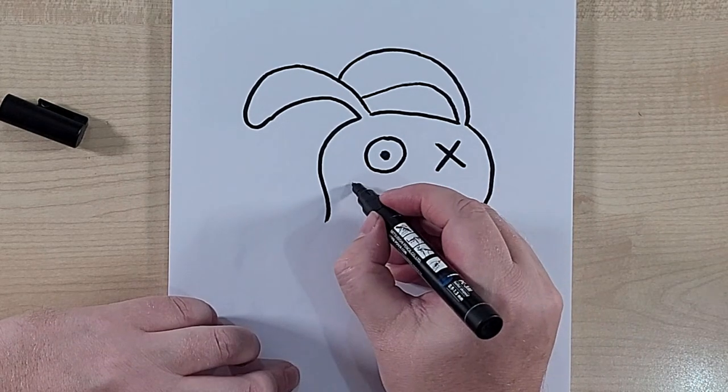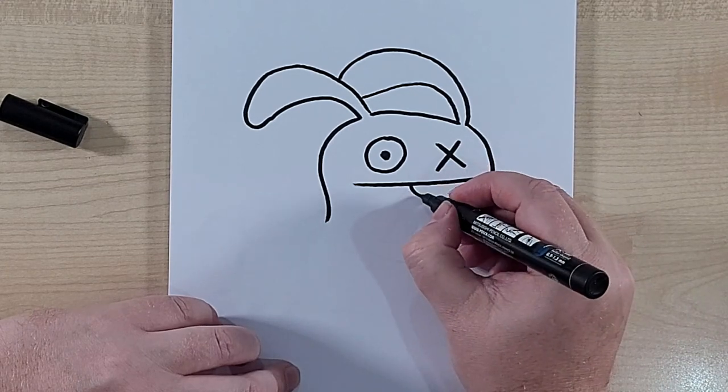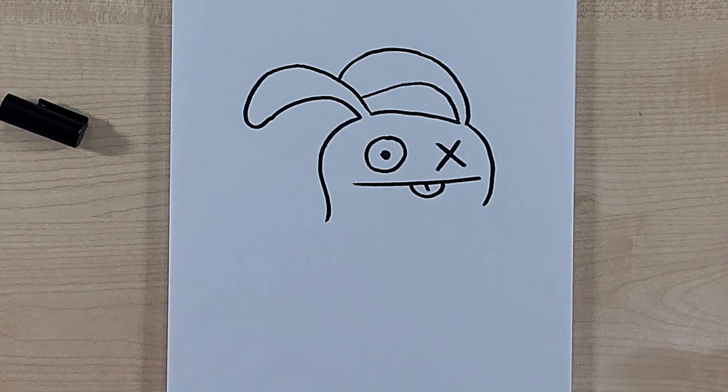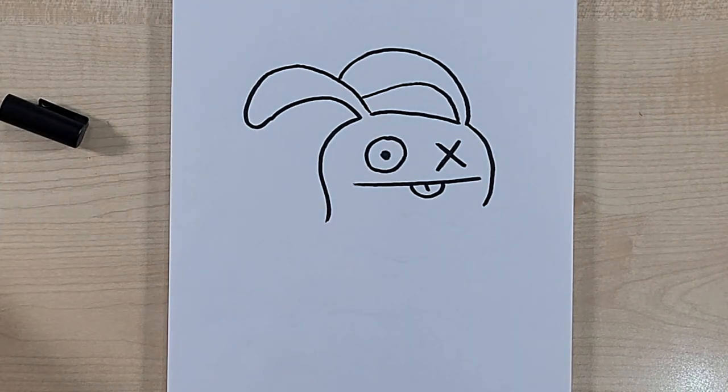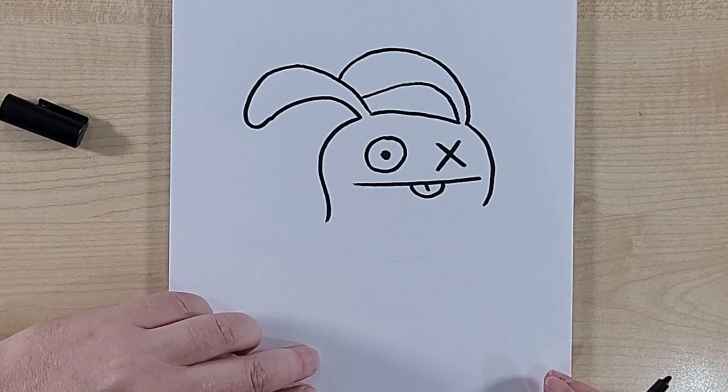And let's draw his mouth. He has got a long straight mouth, just like a lot of the ugly dolls. And he's a bit of a cheeky character. So he's sticking his tongue out like that. There we go. And that's Ox in his head and face. Let's draw the rest of his body.